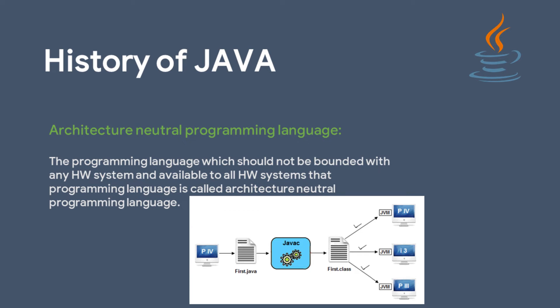The third factor was an architecture neutral programming language. This means the programming language should not be bounded to any particular hardware system and must be available to all hardware systems. If you prepare an application and want to run it on any system where Java is installed, the program should execute without any errors. That is called an architecture neutral programming language.